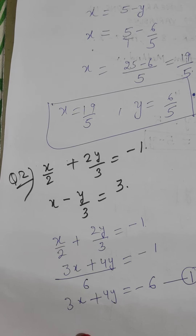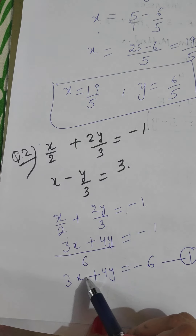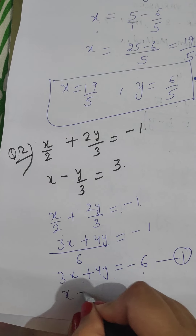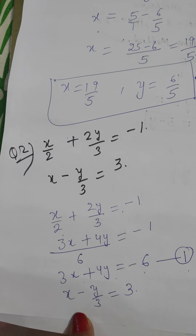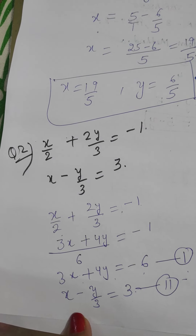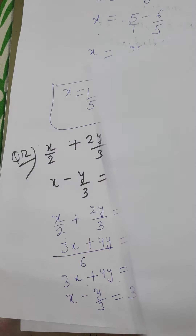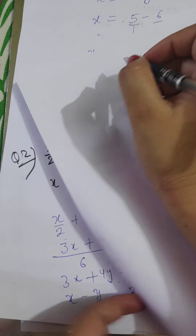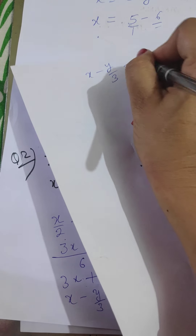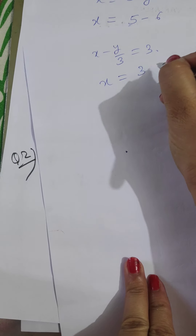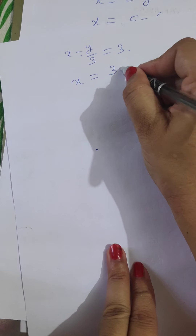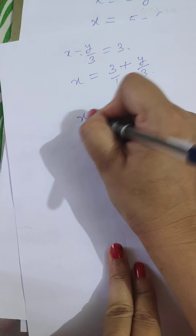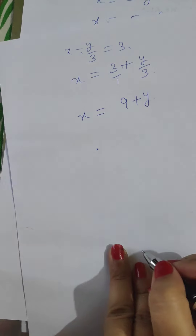Now the second equation is x minus y upon 3 equals 3. From the second equation, x minus y upon 3 equals 3, we solve for x. Transposing the y upon 3 term gives x equals 3 plus y upon 3, which becomes x equals 9 plus y upon 3. We have now expressed x in terms of y from the second equation.